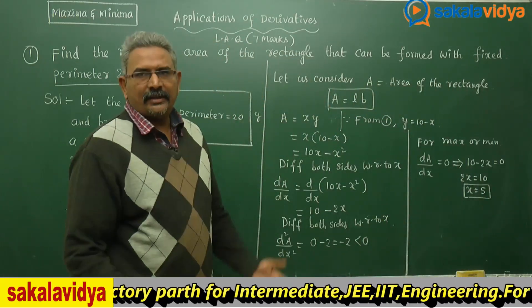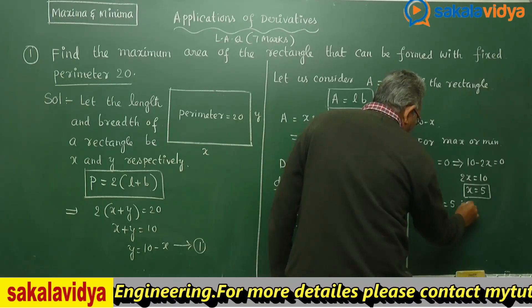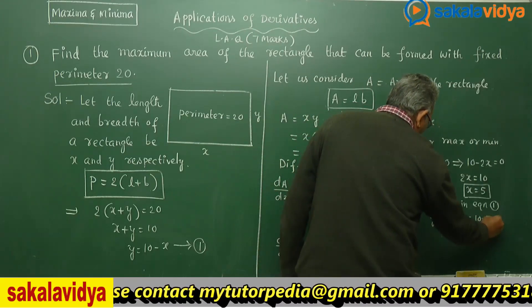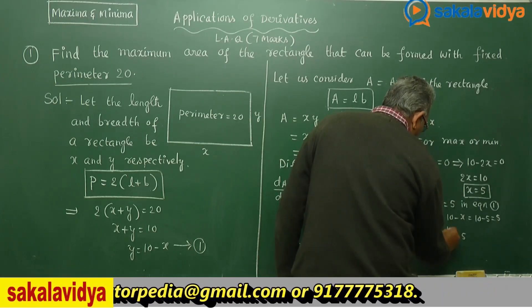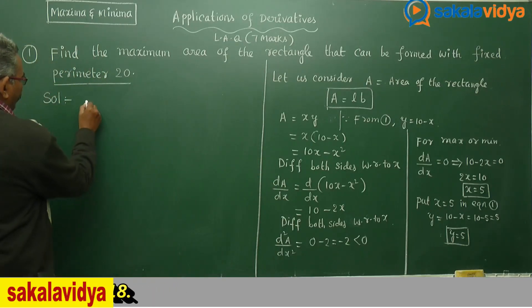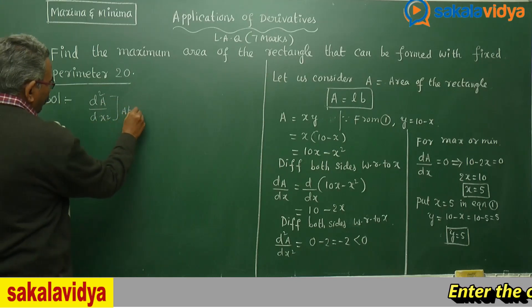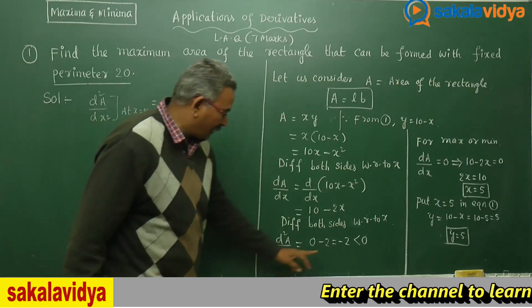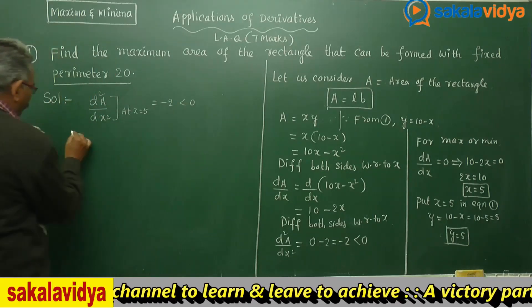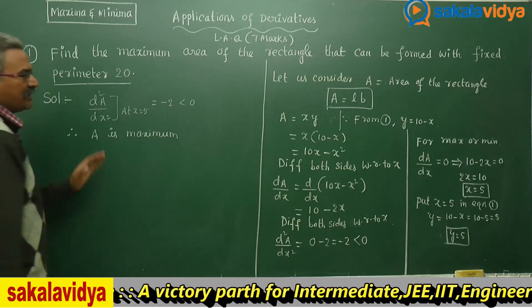Now that we know x = 5, we can find y using equation 1: y = 10 - x = 10 - 5 = 5. We verify using the second derivative test: d²A/dx² at x = 5 equals -2, which is less than 0. Therefore, A is maximum at this point.